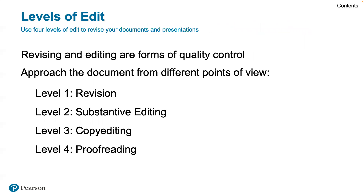Here are the levels of edit we're going to be considering. Revising and editing are forms of quality control — something very much present in the engineering or computer science world. We'll approach the document from different points of view. The first thing is revision: make sure the story and the narrative are all there.